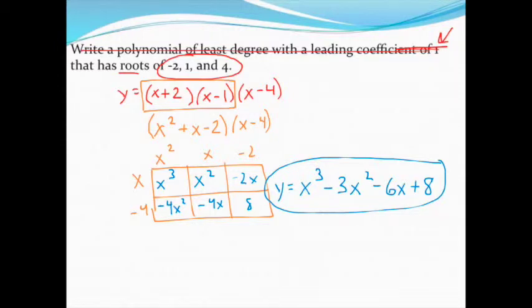Really easy to check this. Graph that polynomial, go to your table and check your three zeros. Check the x values of negative two, one, and four in your table. You should see those matched up to zero in the y column.